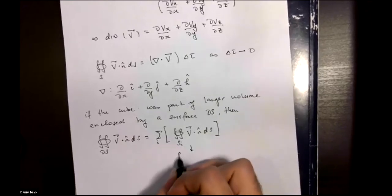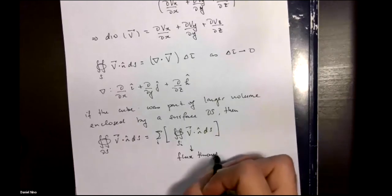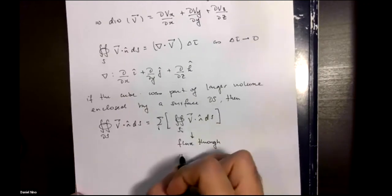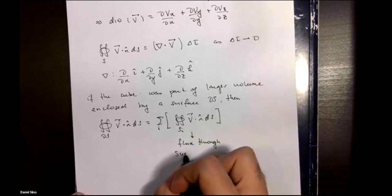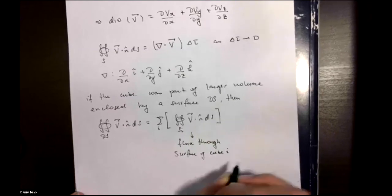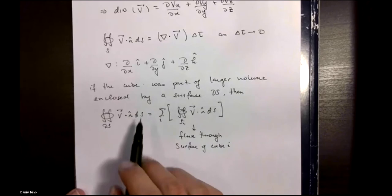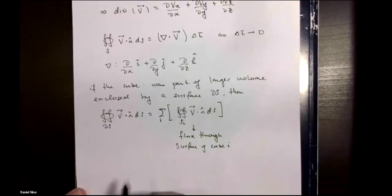This has to be equal to the sum. This is the flux through the volume over several of these small cubes, which we're going to denote their surfaces by s sub i. This is the flux through the surface of cube i, of a small cube i that makes up our larger volume that we're considering.